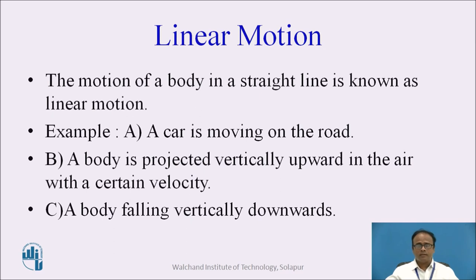Let us consider linear motion. The motion of a body in a straight line is known as linear motion. For example, a car moving on the road is moving in a horizontal plane. The second example: a body projected vertically upward in the air with a certain velocity — that means the motion happens in a vertical plane. The third example is a body falling vertically downwards. These are the examples of linear motion.